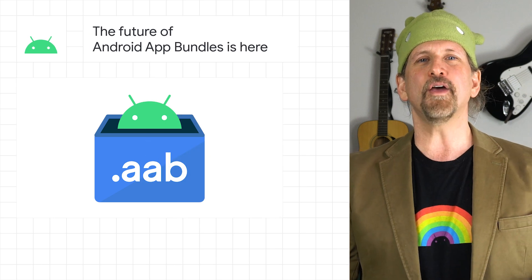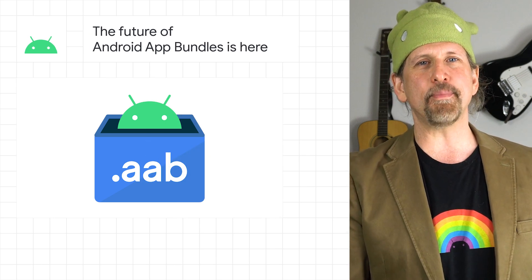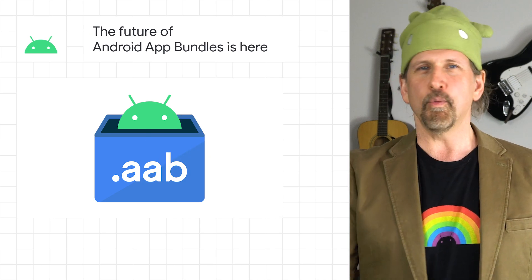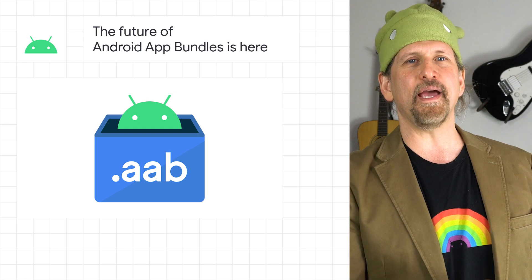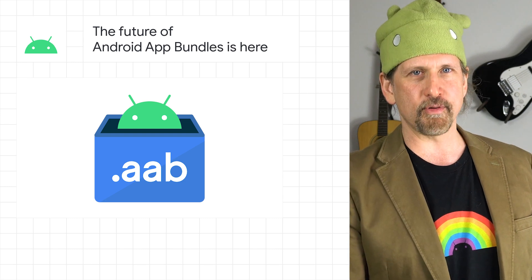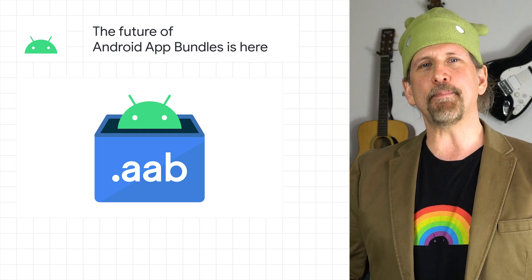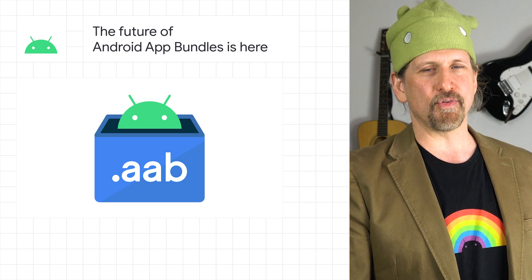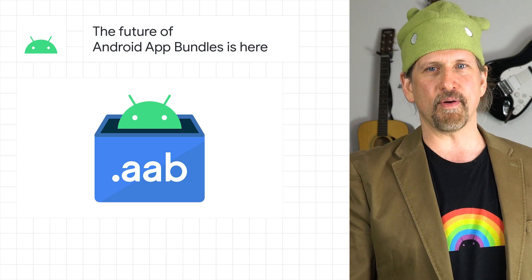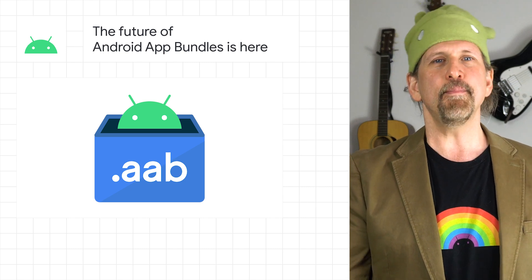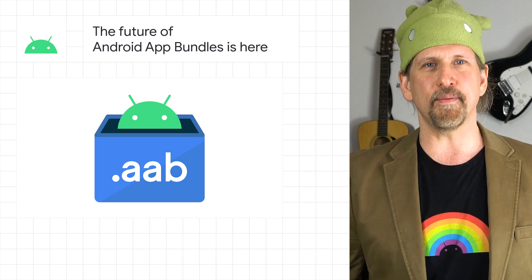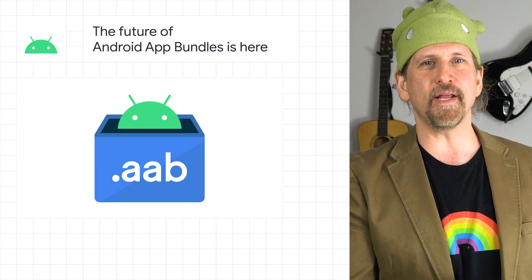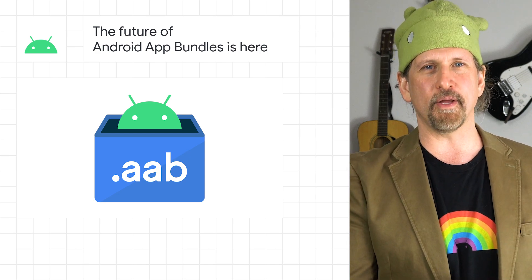In August, Google Play will start requiring new apps to be published with the Android App Bundle, replacing APKs as the standard publishing format. Google Play uses app bundles to generate and optimize APKs for different device configurations and languages, making your app smaller and faster to download. Check out the post for more, including an FAQ on app bundles.